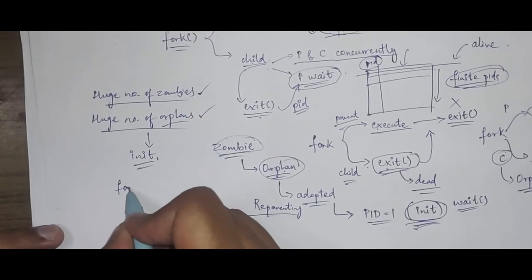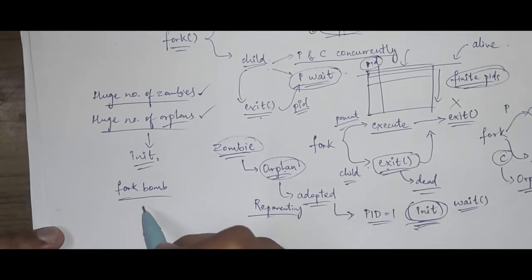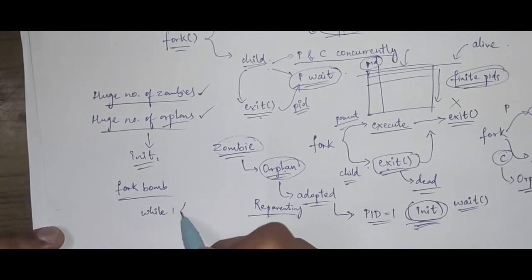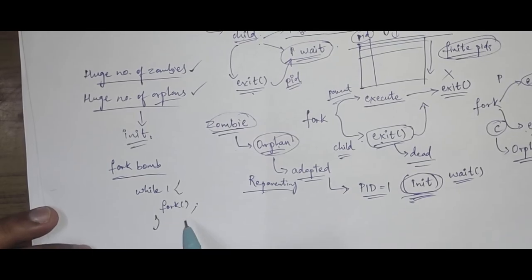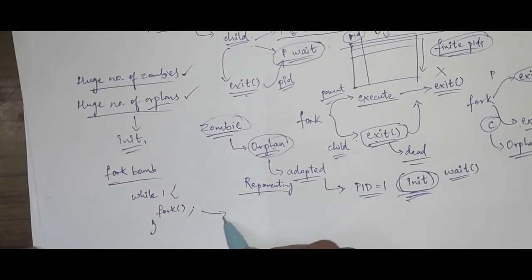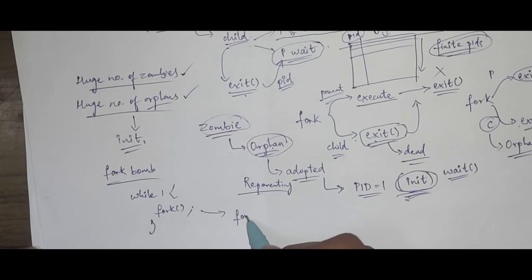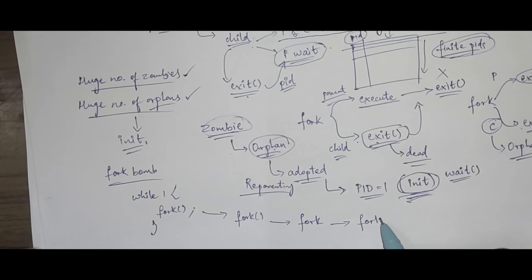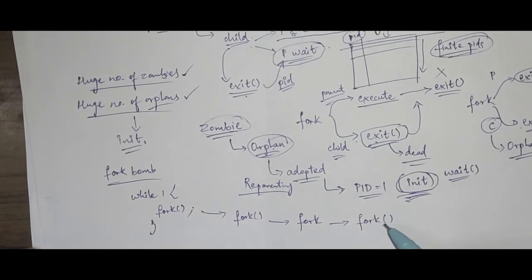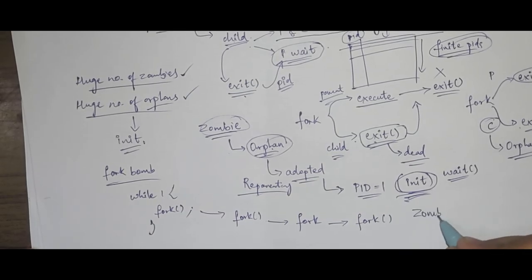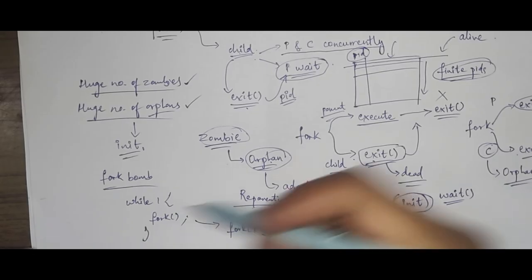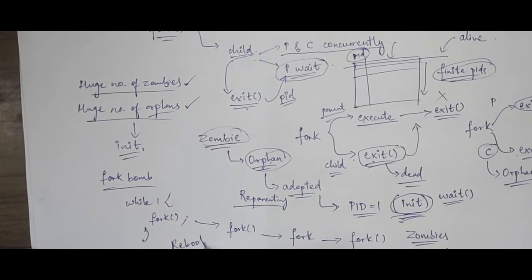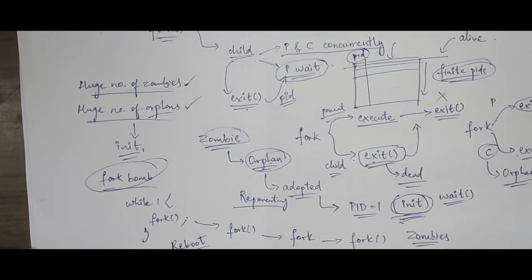There is one more term worth mentioning: the fork bomb. This is when there is an infinite loop in which all you do is call fork with no wait call. The parent keeps creating child processes, each child again calls fork, and this keeps going. Since there is no wait, a huge number of zombies are created, the entire process table gets filled, and the only way to recover is to reboot your system.